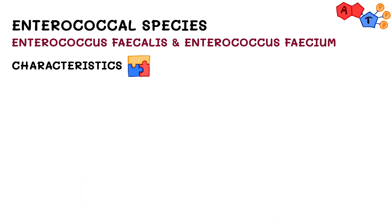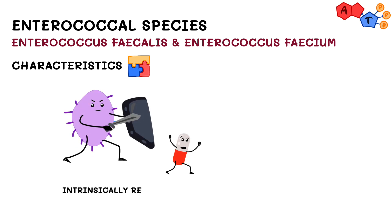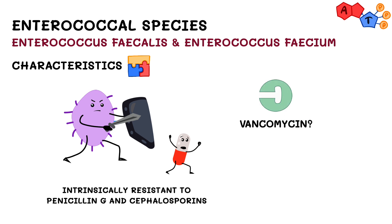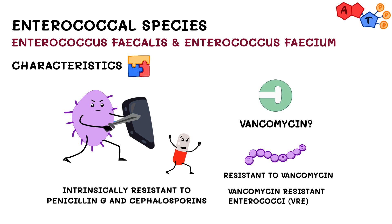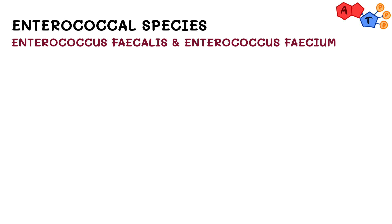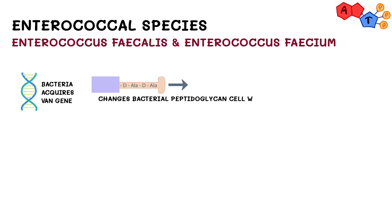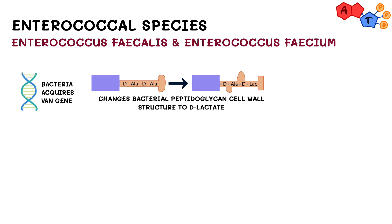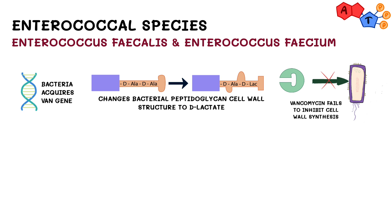For virulence factors, enterococci are intrinsically resistant to penicillin G and cephalosporins, so we should think about vancomycin — but the issue is that many times enterococcus are resistant to vancomycin. We call these vancomycin resistant enterococci, or VRE. What happens at the molecular level is that the bacteria acquires the van gene, which changes the structure of the peptidoglycan cell wall from D-alanine to D-lactate. This means vancomycin can no longer bind and inhibit peptidoglycan cell wall synthesis, nullifying the effect of the antibiotic.